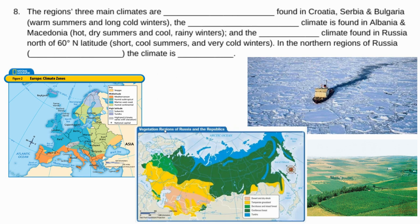The region has three main climates. The humid continental climate is found in Croatia, Serbia, and Bulgaria — this is the type of climate we have in Nebraska, with warm summers and really long, cold winters. There is also a Mediterranean climate found in places like Albania and Macedonia, where you have hot, dry summers and cool, rainy winters, much like what you'd find along the Mediterranean Sea or in parts of Southern California.